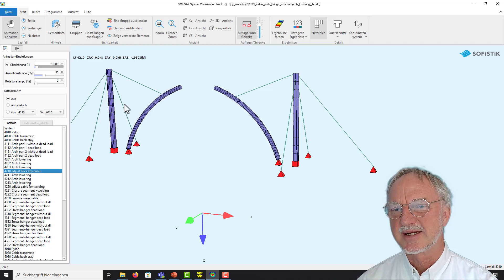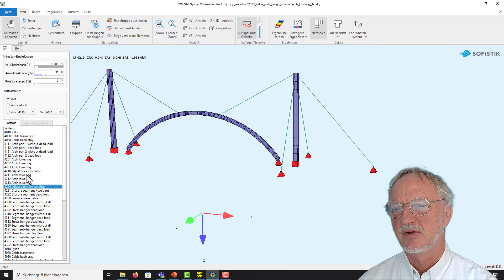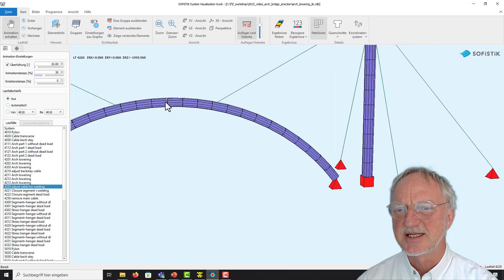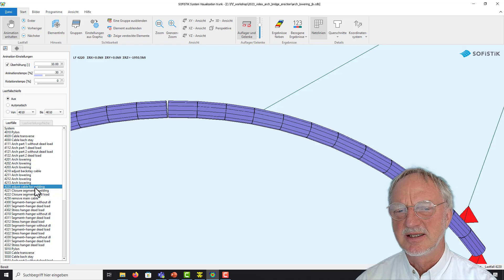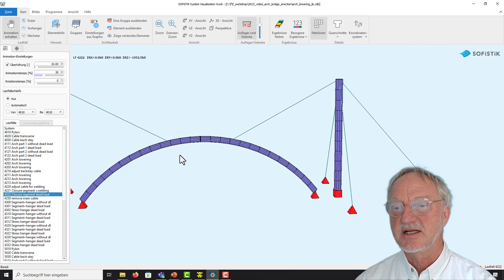Now we can correct our backstay stressing and continue lowering. And of course then at the end we have to adjust our lowering so that we can now weld our pieces together. This is the closing of the arc.